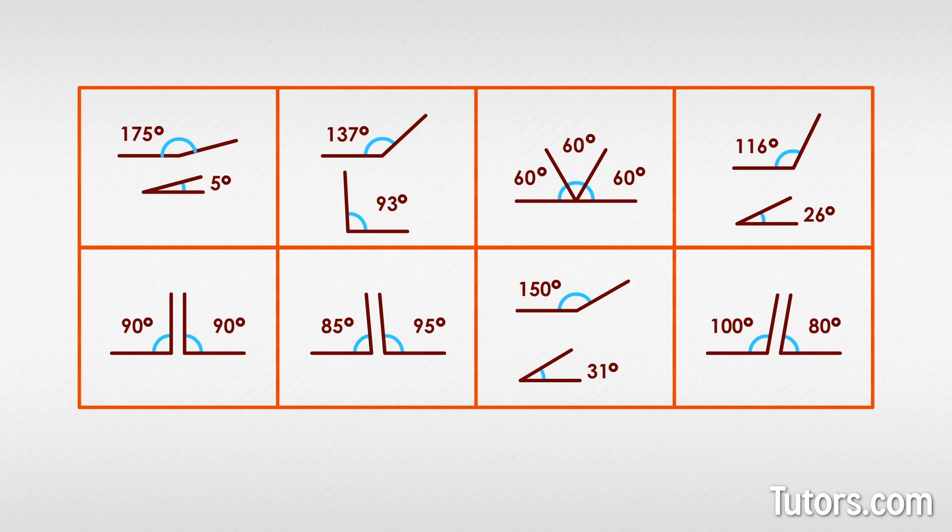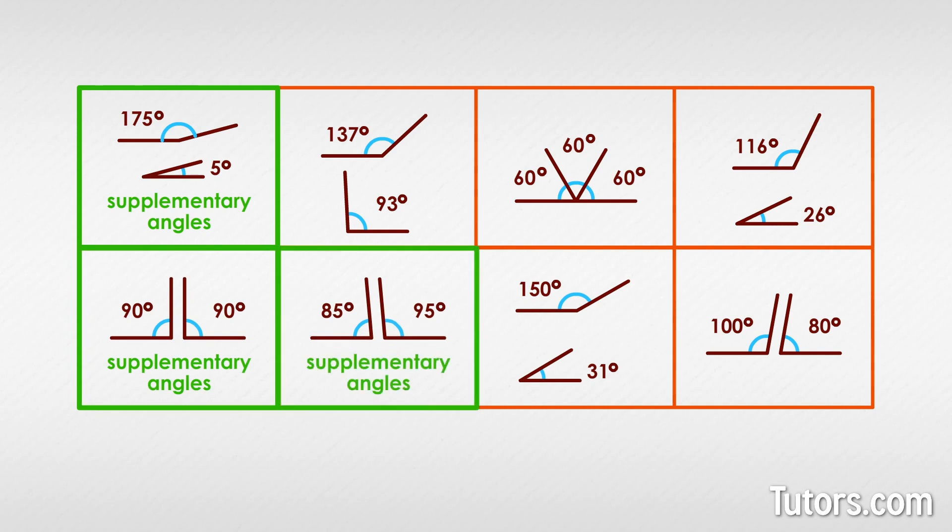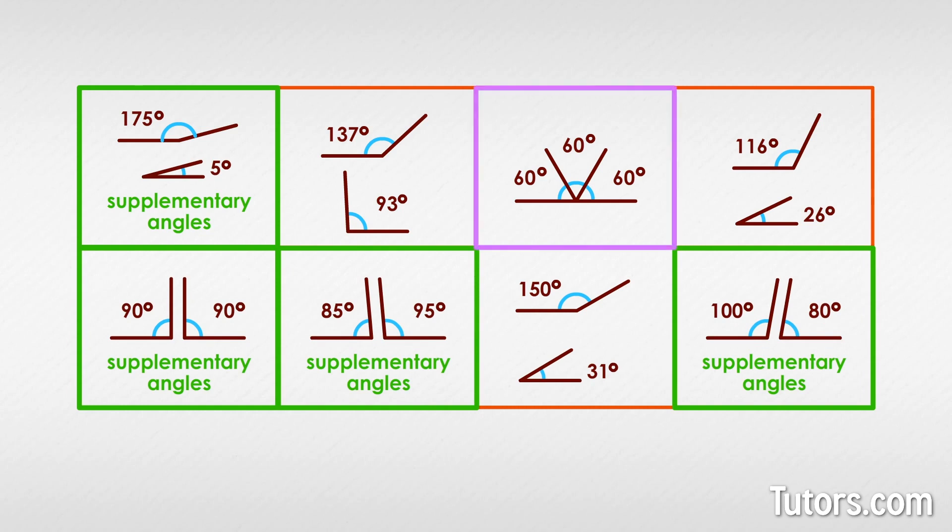The only sets that sum to 180 degrees are the first, fifth, sixth, and eighth pairs. Only those pairs are supplementary angles. The third set has three angles that sum to 180 degrees, but three angles cannot be supplementary.